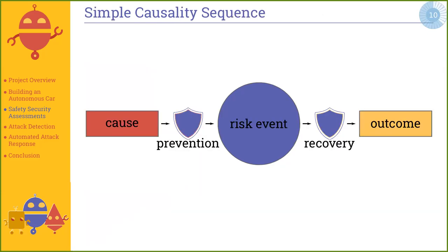In autonomous systems, it is inherently necessary to have safety and security assessed together. We stumbled upon bowtie diagrams, which are an excellent visual representation of cause and effects, allowing us to reason about defenses, attacks, faults, and fault tolerances. In a bowtie diagram, we can see a simple causality sequence: a cause of an event, defenses and barriers for prevention, a central risk event representing what we're analyzing, and on the right side, the outcome and recovery measures. This allows us to intuitively see the full chain of effects of an event, combining security approaches on the left with safety cases on the right.